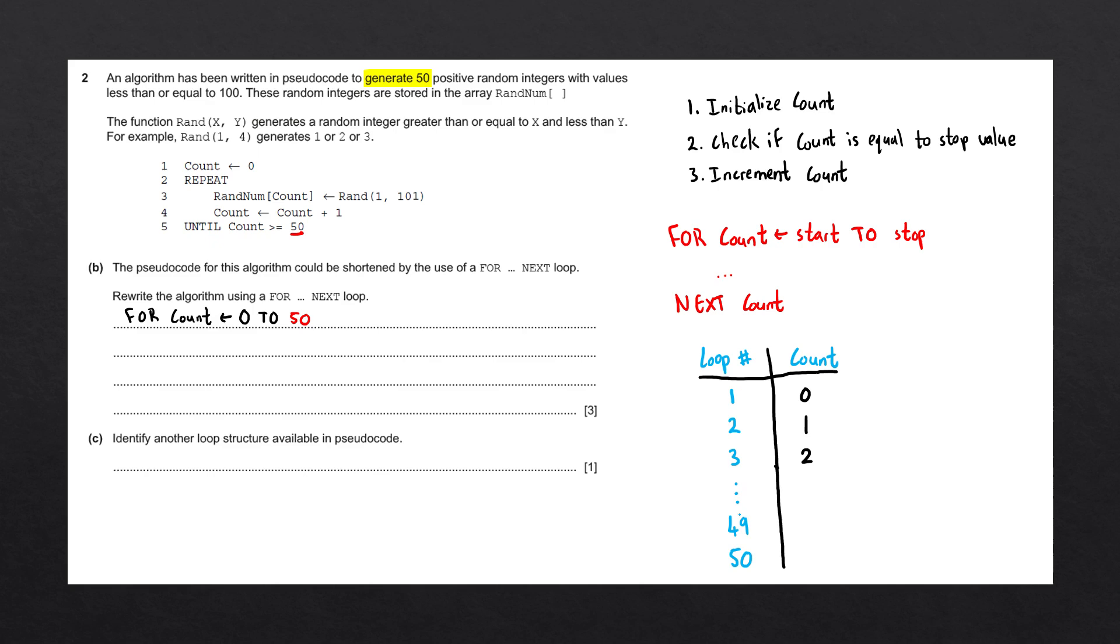If we continue this trend, all the way up to our 50th loop, we'll see that the count only reaches 49, and it does not reach 50. The question told us that we want to generate 50 numbers, so we only want to loop 50 times. But that must mean that the count needs to stop at 49. So instead of writing 50, the loop needs to stop when count reaches 49.